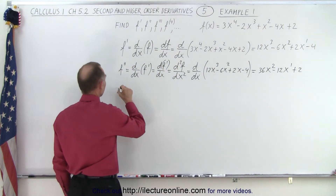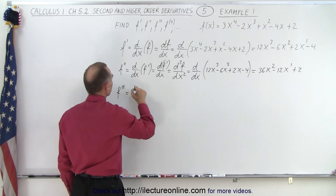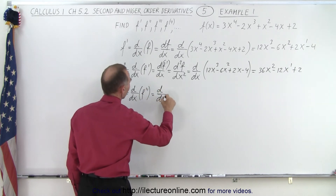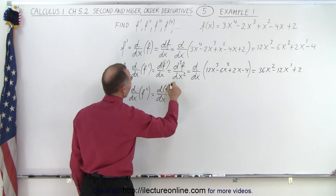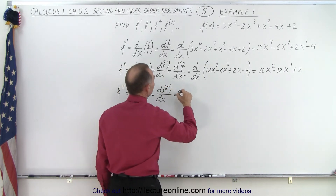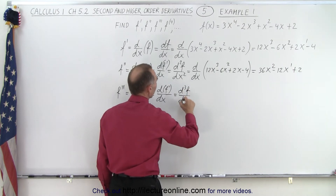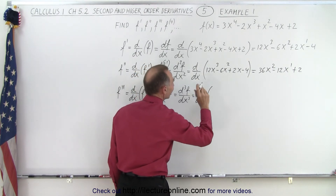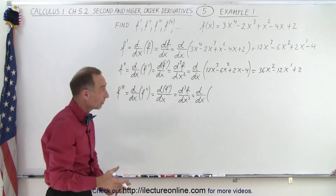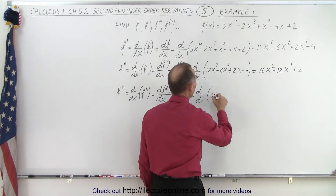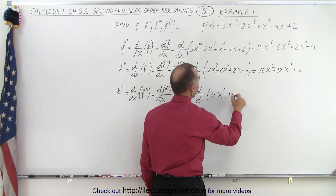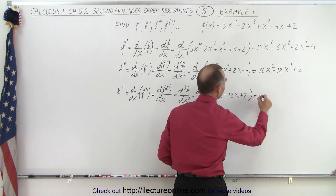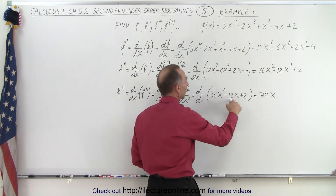Now we're going to take the third derivative, f triple prime, which is equal to d/dx of f double prime, or simply d³f/dx³, which is equal to the d/dx of the second derivative. So now we're taking the derivative with respect to x of the second derivative to get the third derivative. We write 36x squared minus 12x plus 2, and then take the derivative of that: 2 times 36 is 72, giving us 72x to the first power minus 12.